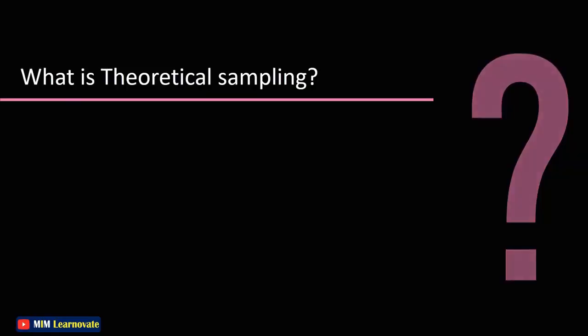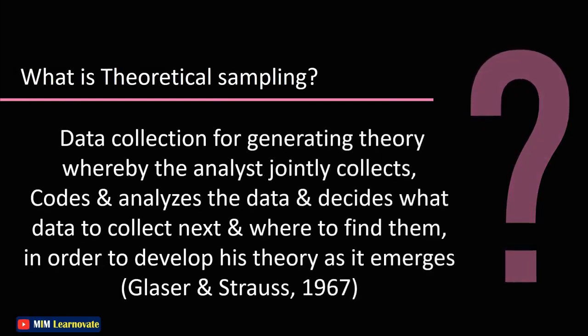What is theoretical sampling? Theoretical sampling is the process of data collection for generating theory, whereby the analyst jointly collects, codes, and analyzes the data and decides what data to collect next and where to find them in order to develop his theory as it emerges.